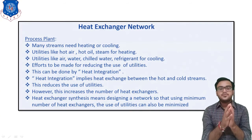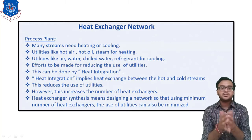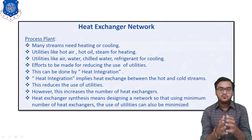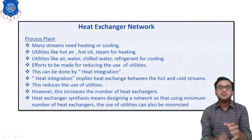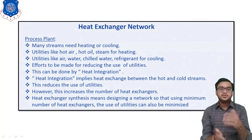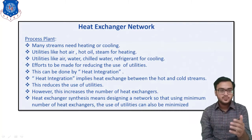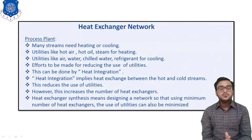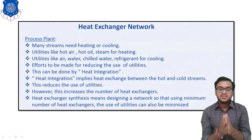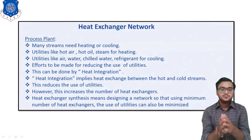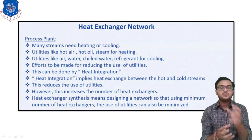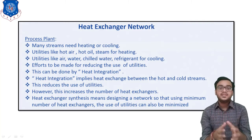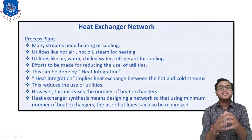In a process plant, we have many streams — heating streams and cooling streams. In any process plant, we have more than one stream, and through different streams, different types of energy flow with the fluid. We arrange streams in such a way that mutual heat exchange is possible between the hot stream and the cold stream. This concept is known as heat integration, or heat exchanger networking.